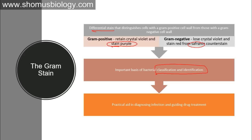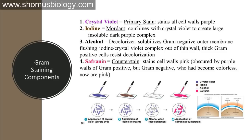Knowing whether a bacterium is gram positive or gram negative tells us which properties to expect, and we can then continue with other methods of bacterial identification. Gram staining is also a practical aid in diagnosing infections and guiding drug treatment. There are four components used in gram staining: crystal violet as the primary stain, which stains all cell walls purple.